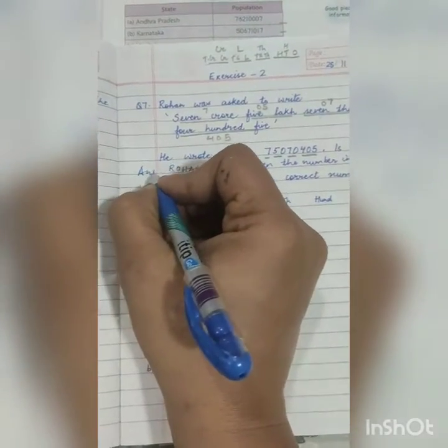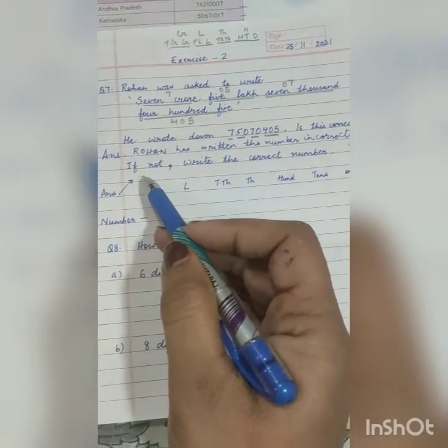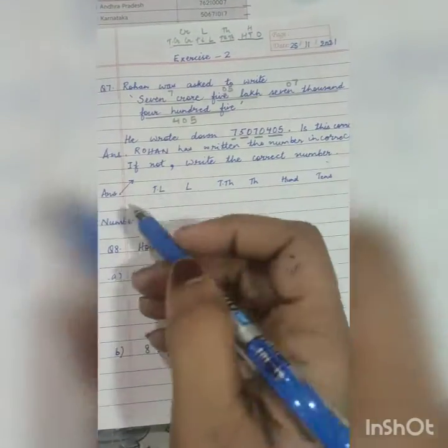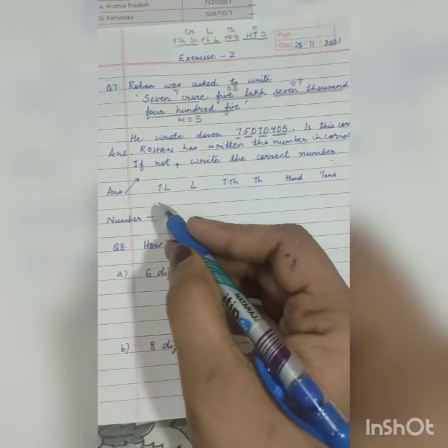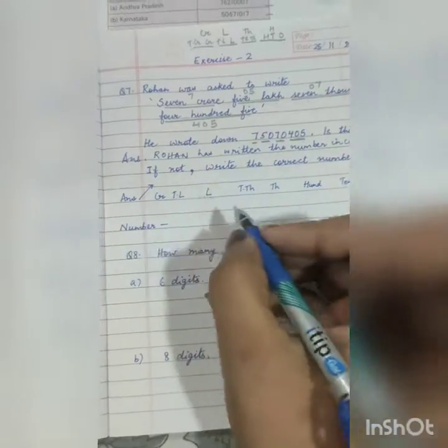So this is our answer. Rohan has written the number incorrectly. Now they have told us if not, write the correct answer. So what is the answer? Yes children, you can tell me. Here we will also make the place value chart.